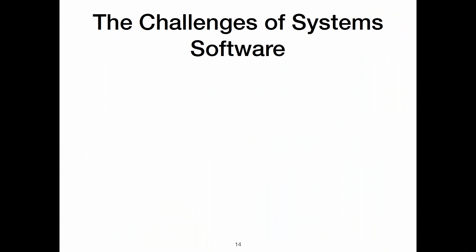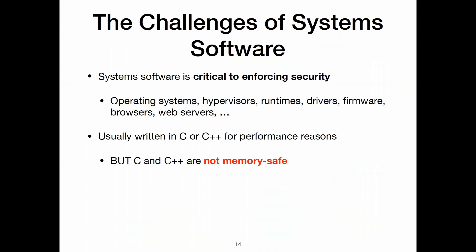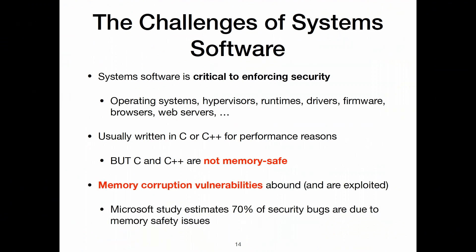Why is system software challenging? A lot of the challenges have to do with low-level system software — you're programming without a net, the software is critical to enforcing security and safety requirements, there aren't particularly great debugging tools, and you're working on things like operating systems, hypervisors, runtimes, drivers, firmware, browsers, and web servers. Typically this code is written in C and C++ for performance. The problem is that C and C++ are not memory safe, so you see a lot of memory errors, crazy kernel panics, and memory corruption vulnerabilities that are often exploited. A recent Microsoft study estimated that 70% of their security bugs are due to memory safety issues.